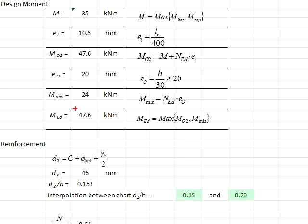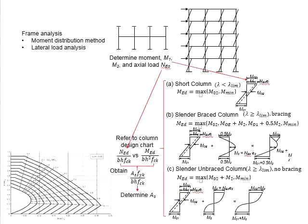Now, your MED will be the bigger value of M02 and M-min. Therefore, your MED equals 47.6 kNm.